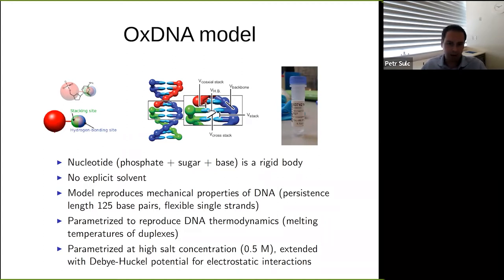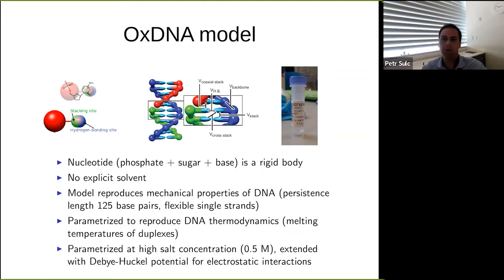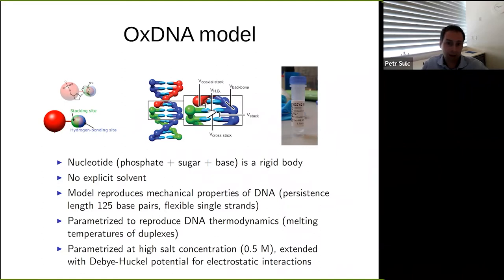Ideally, we would want to simulate these systems at atomistic resolution, where every single atom is a single particle in your simulation. This is great, but there are drawbacks. Despite all the progress in computing over the past several decades, we still cannot simulate very long timescales — state-of-the-art simulations are maybe getting to tens of microseconds, maybe milliseconds if you really push it. But the systems I'm interested in — self-assembling DNA nanotechnology — have 6,000 base pairs, their assembly takes minutes to hours, and the action of these devices is milliseconds and longer. So it's really extremely difficult, very often out of reach for atomistic resolution simulation.